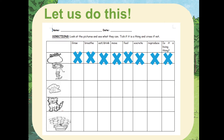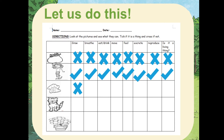Now, can a girl grow? Yes, it can grow — breathe, eat, drink, move, feel, excrete, and reproduce. So she is a living thing. How about a yam? A yam that has been taken off from the soil — well, it's food already, so it's consumed by living things. It doesn't grow anymore, breathe, eat, drink, move, feel, excrete, or reproduce. So it's a non-living thing.